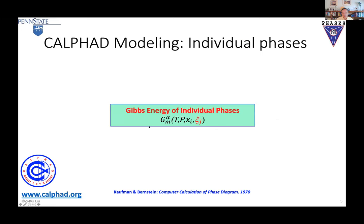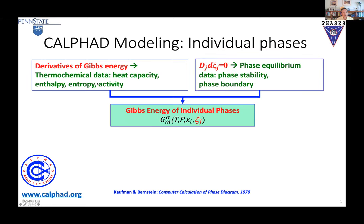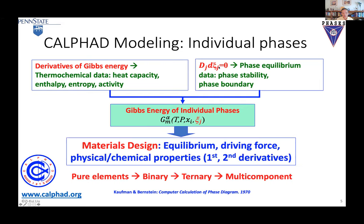CALPHAD modeling involves Gibbs energy of individual phases. We take data from derivatives and from phase equilibrium. In principle, this is enough to give the free energy function, but it's not accurate enough, so we need phase boundaries to refine the model parameters so our prediction is more accurate. We start with one component, then binary and multi-component systems, and then we can do material design — covering equilibrium, non-equilibrium, and even more importantly, chemical and physical properties through first and second derivatives.